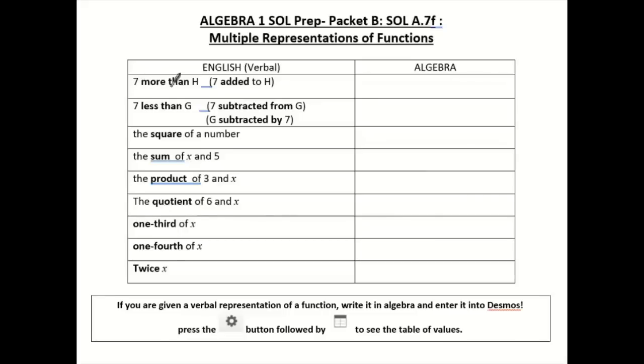The first one says 7 more than H. You might also see 7 added to H. So what that means is I'm taking whatever H is, and I'm adding 7.